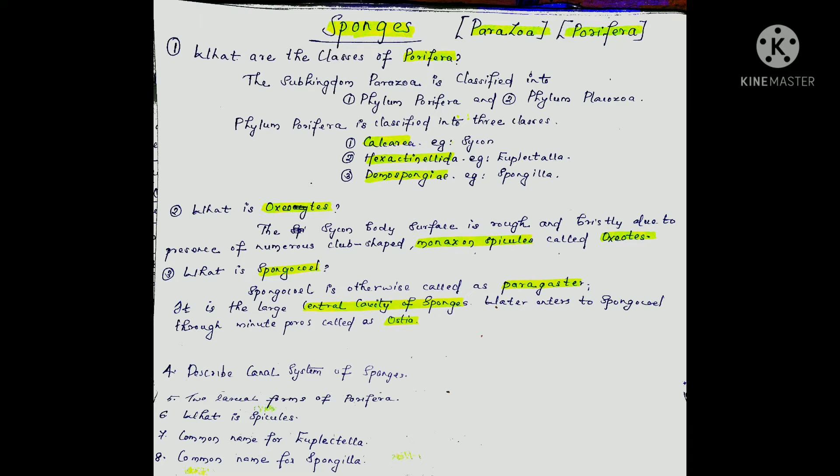When we look at Porifera and its classes, the sub-kingdom has two phyla: Porifera and Placozoa. We will study Porifera's three classes: first, Calcarea; second, Hexactinellida — which is a glass sponge; and third, Demospongiae — which is not a glass sponge.